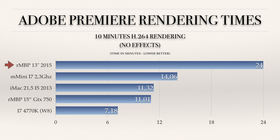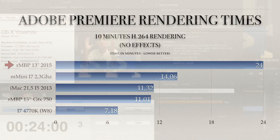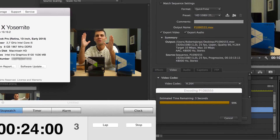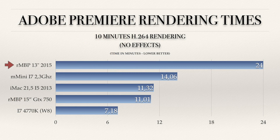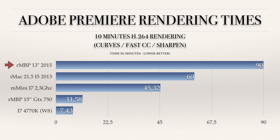The first test is a 10-minute QuickTime H.264 file with no effects at all — just placed on the timeline and rendered. The 13-inch MacBook Pro took 24 minutes to render this 10-minute file. Since we are talking about portability, I'll mostly compare with the Retina MacBook Pro 15-inch with the GTX 750, the late 2014 model. The Retina MacBook Pro 15-inch takes roughly half the time of the 13-inch.